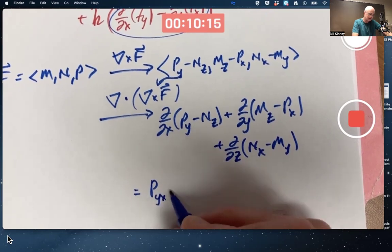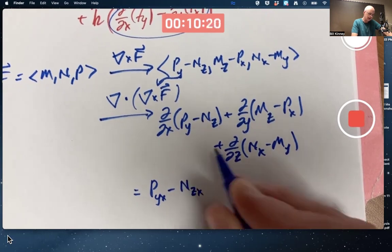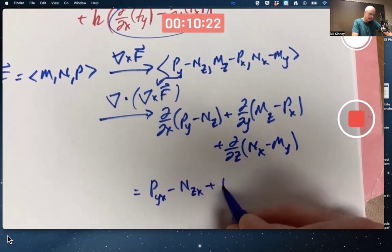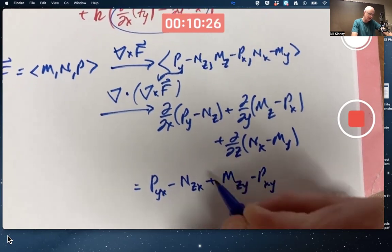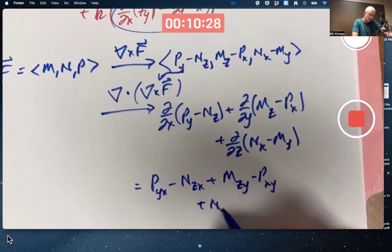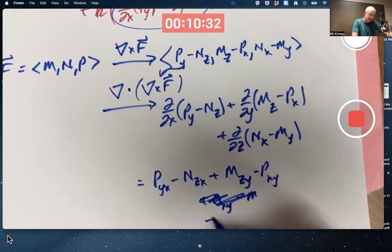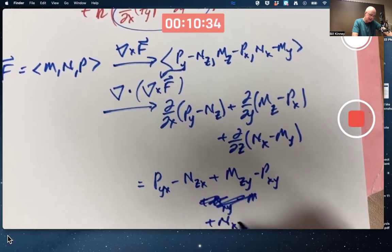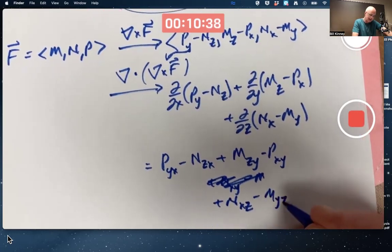Let's see what this simplifies to. Just continuing to use subscript notation, including for second derivatives, the derivative of Py with respect to X, you'd write as Py,X. The derivative of Nz with respect to X would be Nz,X, with a minus sign. Continuing in this one, it would be Mz,Y, minus Px,Y, and then plus Nx,Z minus My,Z. And guess what?